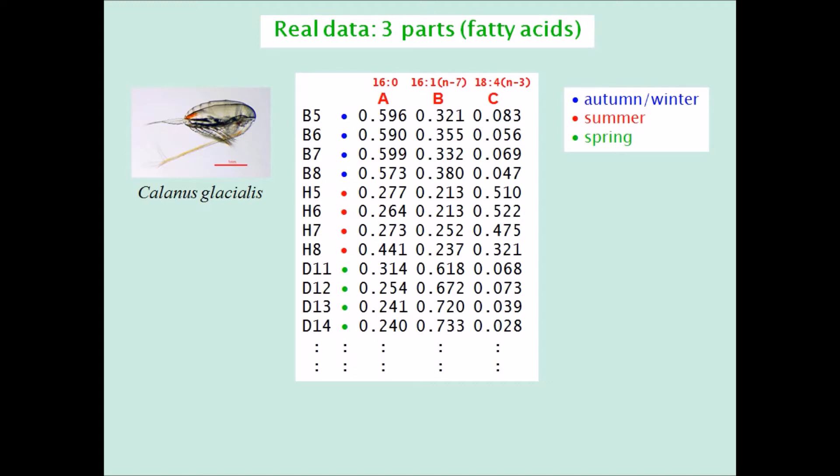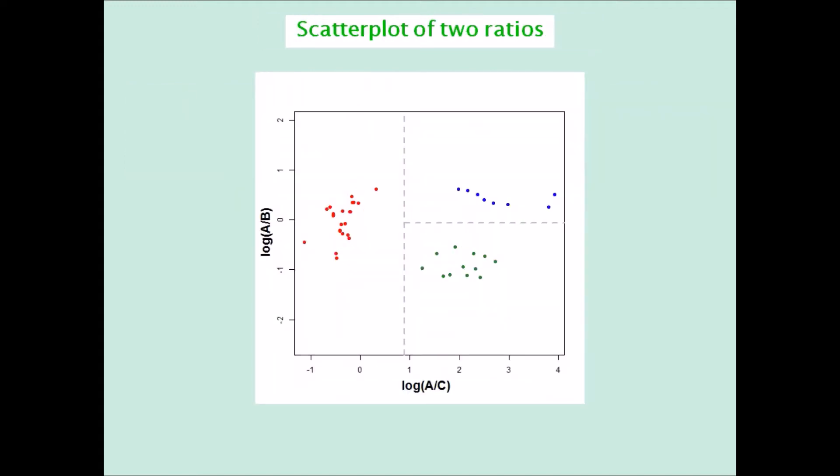This is the scatter plot of two log ratios based on these three fatty acids. These two ratios are represented by this graph, and they perfectly separate the samples from the three seasons.